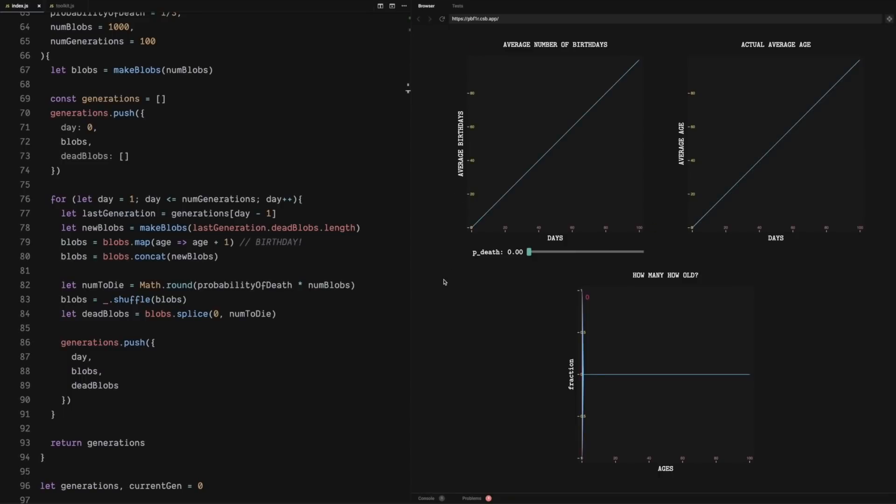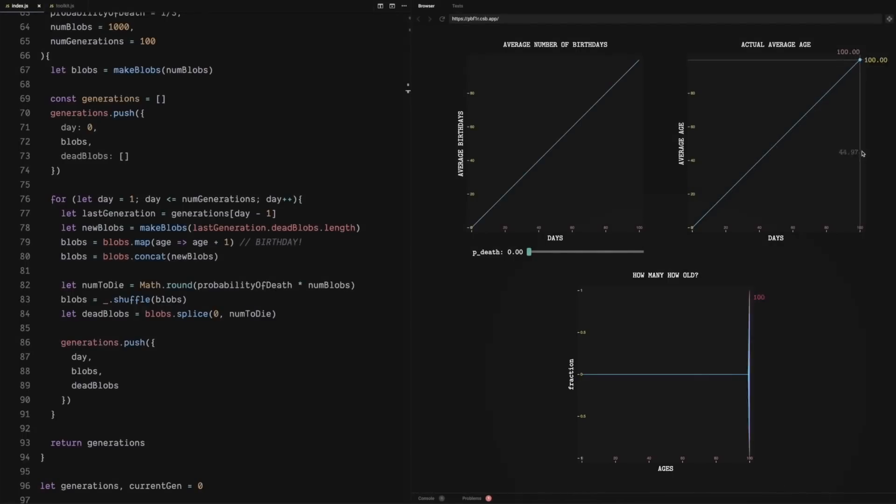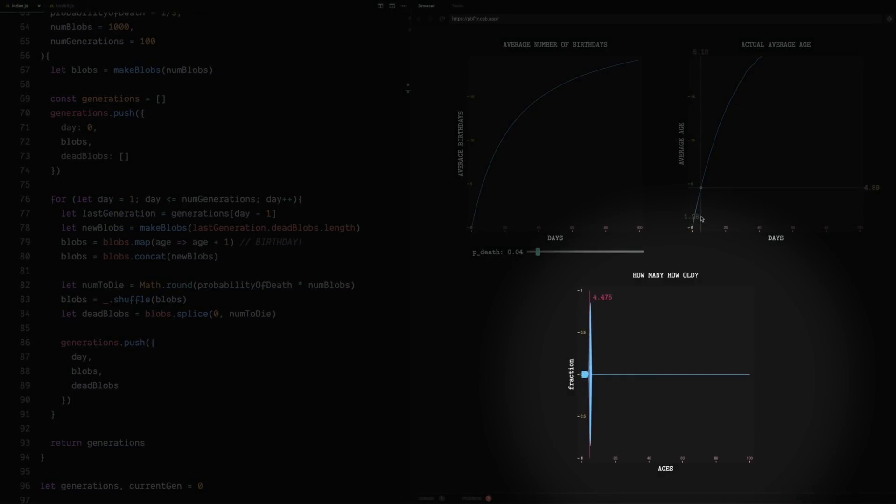This is really fun because we can see the distribution of age change over time. In the case that no blobs die, you can see that all blobs get older at the same time. But if we add some chance of death, you can see that the initial population of blobs slowly dies off and progressively gets replaced by younger generations until things all balance out and the age distribution stabilizes.